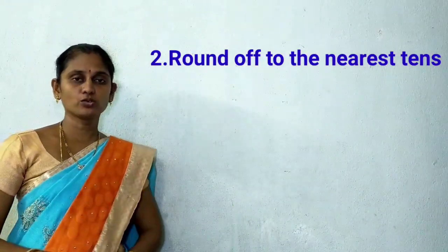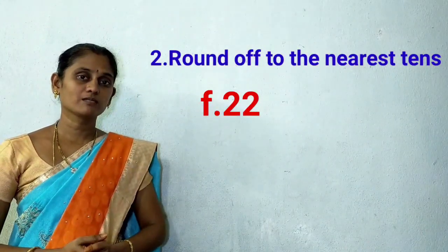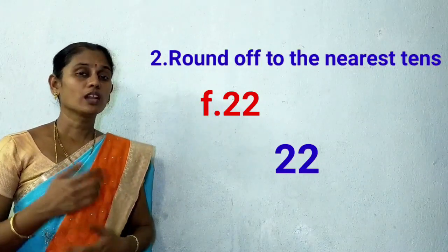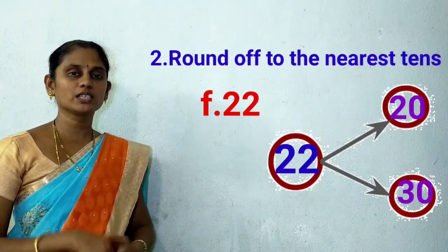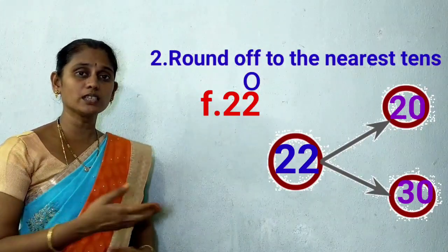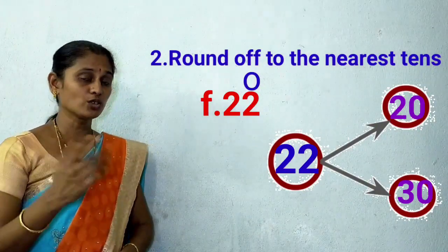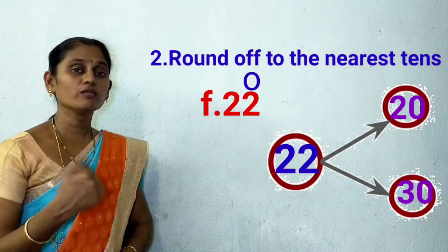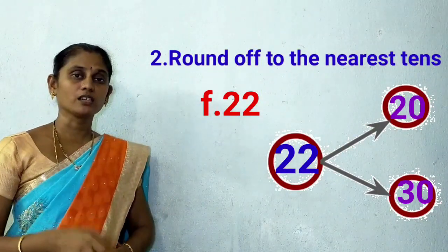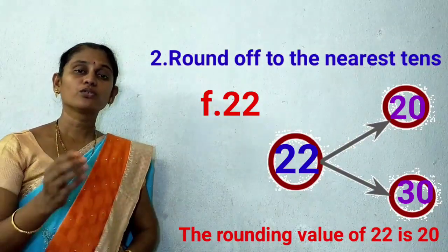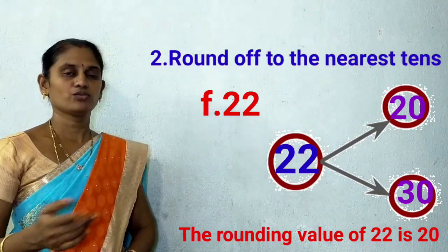Now look at the last number — 22. 22 lies in between 20 and 30. The digit in the ones place is 2. As 2 is less than 4, the rounding value is the smaller tens. The smaller tens here is 20. So the rounding value of 22 to the nearest tens is 20. Good. Children, we have all practiced magic drill 1.4. The remaining we will practice in the next session. Thank you.